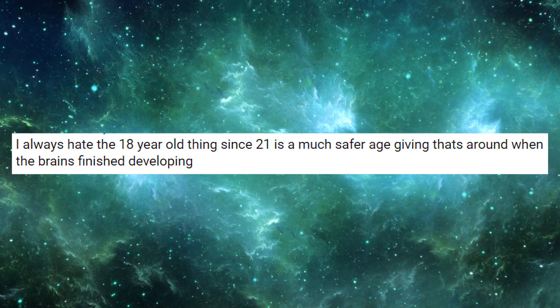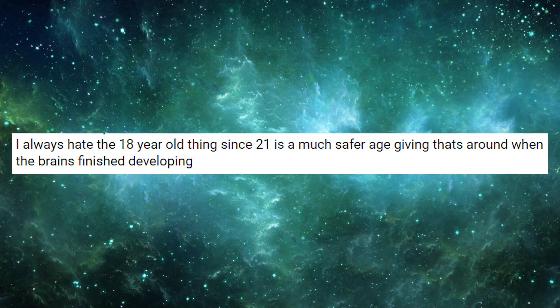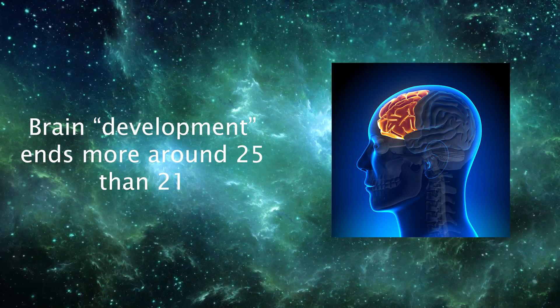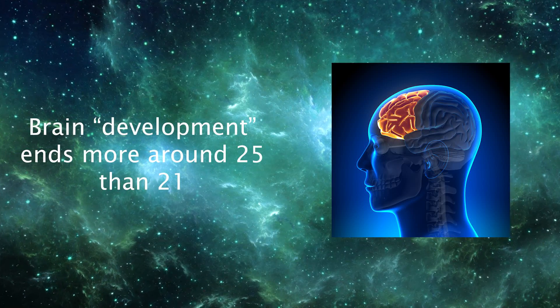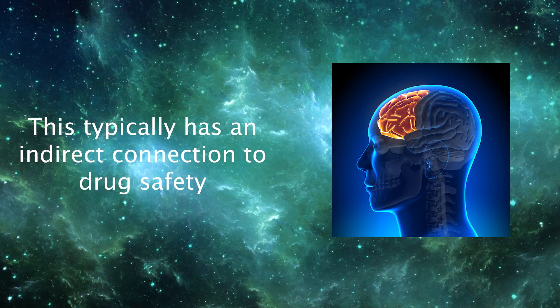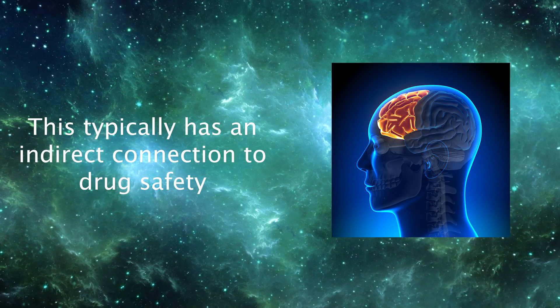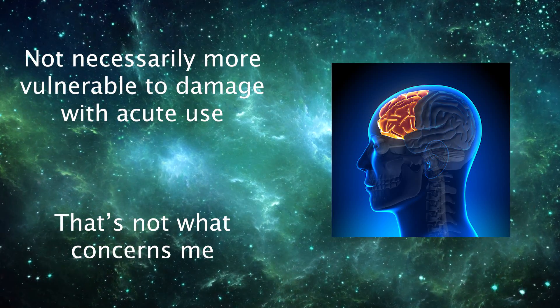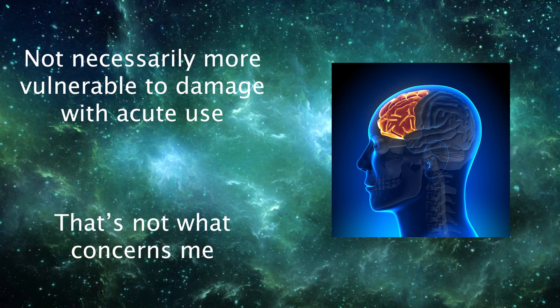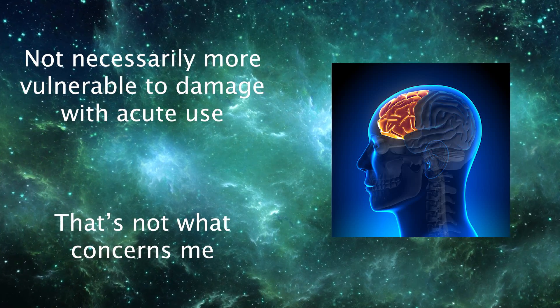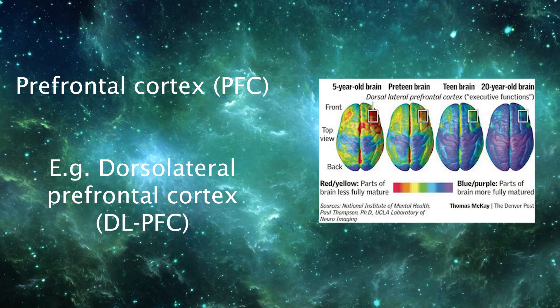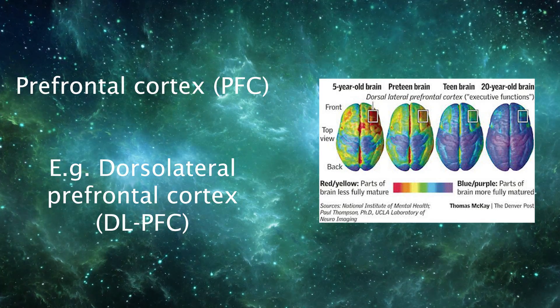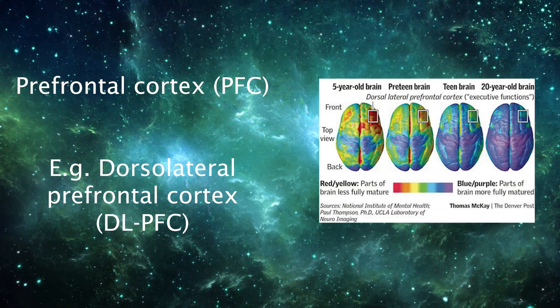I always hate the 18-year-old thing. 21 is a much safer age, given that's around when the brain is finished developing. There are a couple things I want to address here. First, the brain development you're referring to ends more around 25 than 21. Second, this entire topic primarily has an indirect connection to drug safety. Using something at 18, for example, doesn't necessarily mean your brain is more vulnerable to damage. That's not really what concerns me about teens and young adults using drugs. Rather, the region of the brain that's still being developed is the prefrontal cortex. This region is vital for decision-making and impulse control, among other complex cognitive functions.